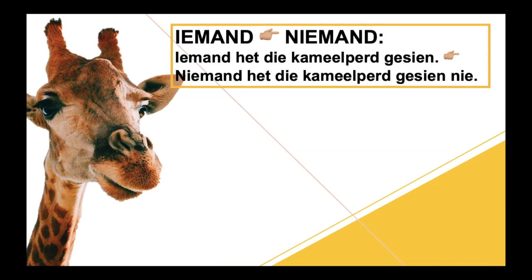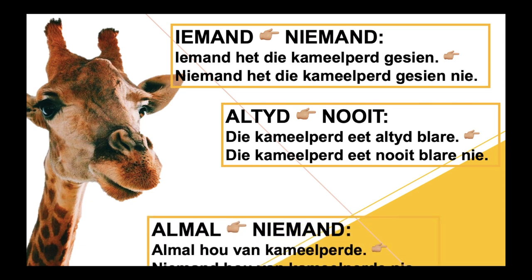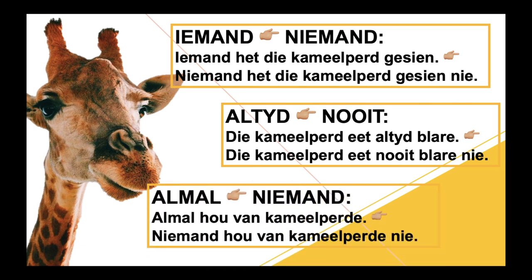'Iemand' changes to 'niemand' — someone to no one. So 'iemand het die kameelpaard gesien' becomes 'niemand het die kameelpaard gesien.' I added this one to show you: when that word you had to change to the negative was the beginning of the sentence as your subject, because you've changed that word to the negative, you cannot add another negative after your verb one and at the end of your sentence — that's going to be three negatives, and three negatives makes a positive. 'Altyd' changes to 'nooit' — always changes to never. 'Die kameelpaard het altyd geblood' becomes 'die kameelpaard het nooit geblood nie.' And 'almal' changes to 'niemand'. So 'almal hou van kameelpaarde' becomes 'niemand hou van kameelpaarde nie' — so like everyone likes giraffes, no one likes giraffes — well, everyone likes giraffes, they're the best.